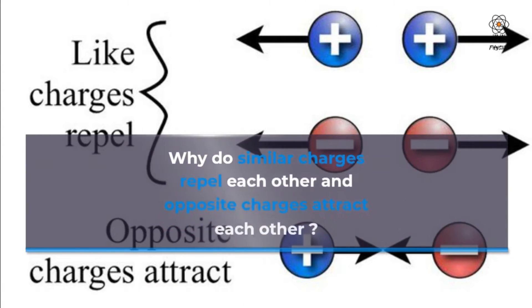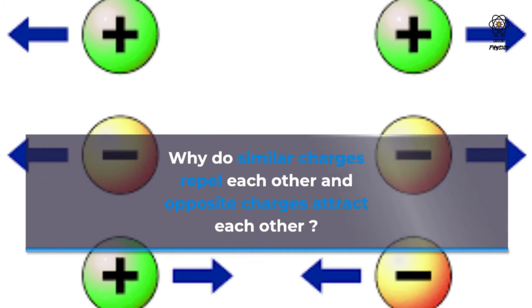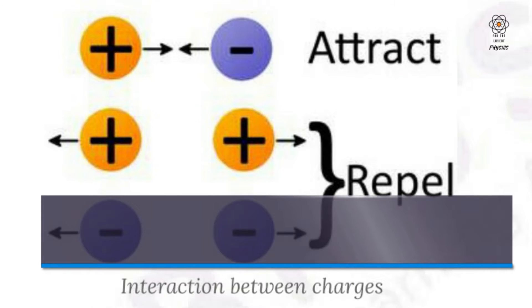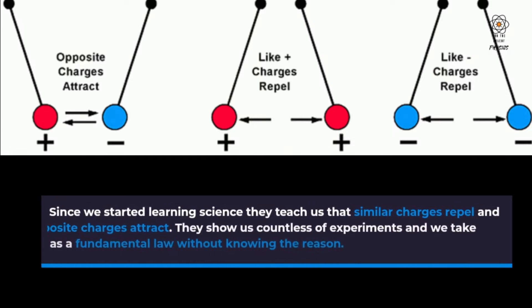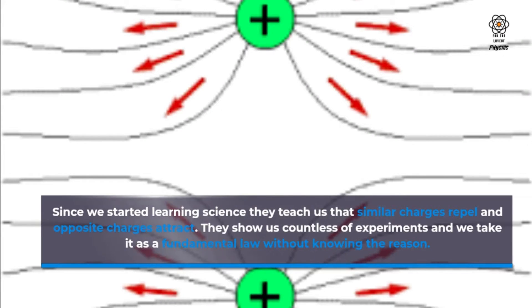Why do similar charges repel each other and opposite charges attract each other? Since we started learning science they teach us that similar charges repel and opposite charges attract. They show us countless experiments and we take it as a fundamental law without knowing the reason.